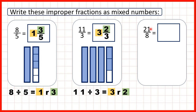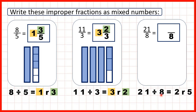Now we have 21 over 8, or 21 eighths. Again, the denominator stays the same and we divide 21 by 8. That's 2 remainder 5, because 2 times 8 is 16 and from 16 we need 5 more to get to 21. So our mixed number is 2 and 5 eighths, with the whole number from the division and the remainder as the numerator.